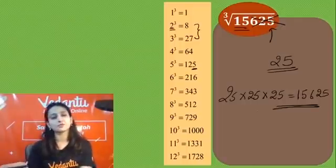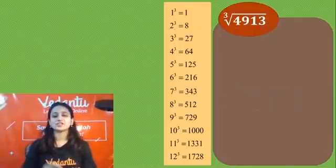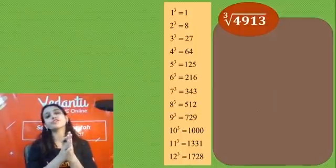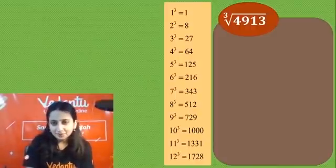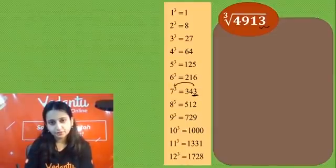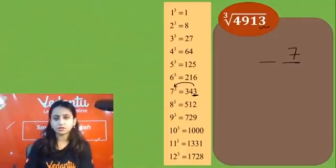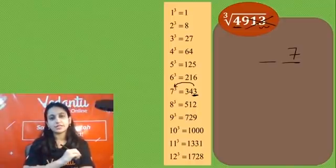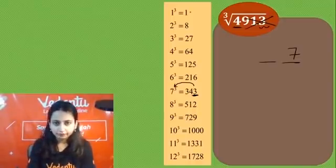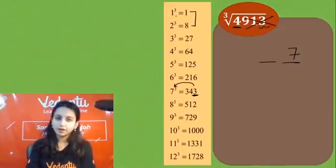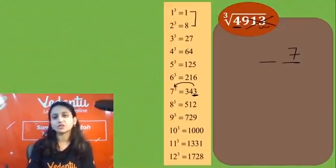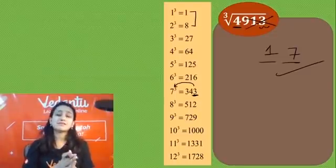One more — fata fat karo! Ones place has 3, corresponding number is 7. Forget the last 3 digits — what remains is 4. Where does 4 lie? It lies between 1³ and 2³. Take the smaller: 1. So the answer is 17. Ab 4 questions screen pe hain — pause the video and solve all four in 20 seconds!